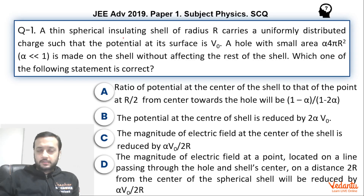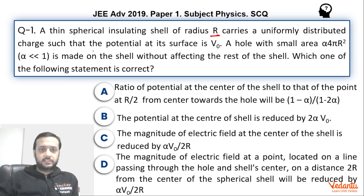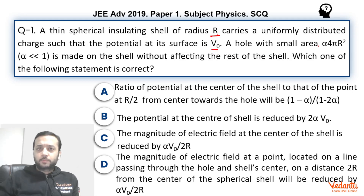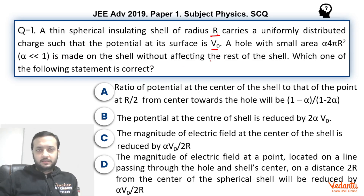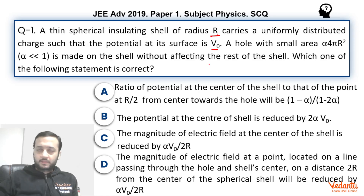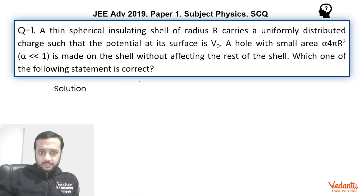This is a spherical insulating shell of radius R which has a uniformly distributed charge. Under this condition, the potential at the surface of the shell has been given as V₀. What we are doing is removing a very small area from the shell whose value is α × 4πR², where α is a fraction much less than 1. We have to assume that the remaining shell stays as it is — the charge on the remaining part is unchanged. Which of the following statements are correct?